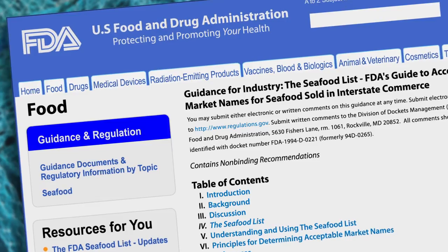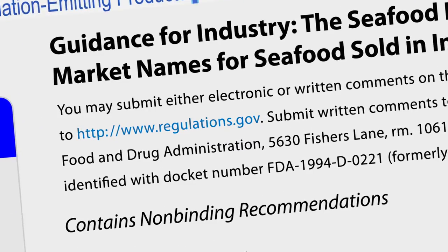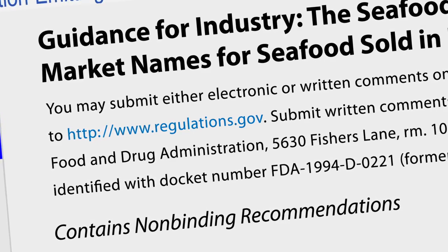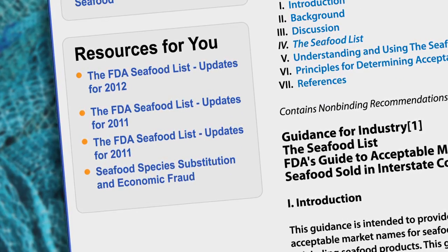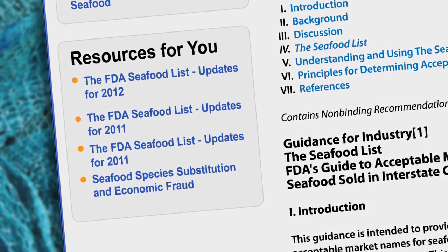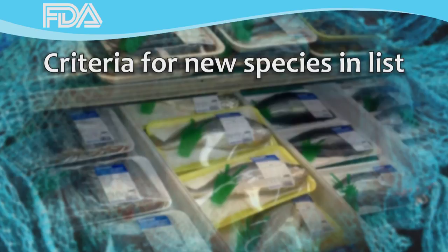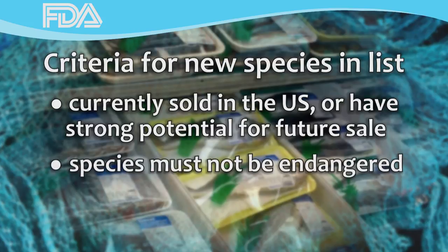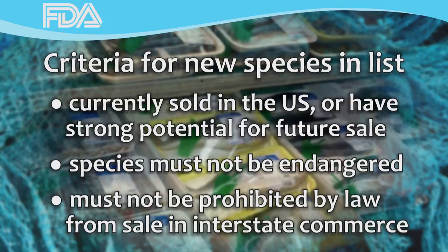This guidance webpage also provides contact information for submitting comments and questions to the agency regarding acceptable seafood names. On the left side of the webpage, you'll notice a Resources for You section with links to our most recent seafood list updates and our seafood economic fraud page. For a new seafood species to be added to the list, the species must be either currently sold in the United States or have a strong potential for sale in the near future. The species must not be endangered, and it must not be prohibited by law from sale in interstate commerce.